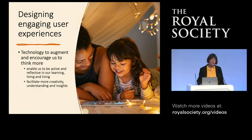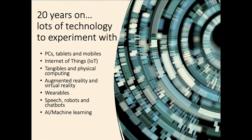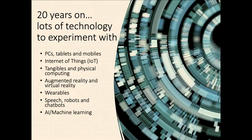Twenty years on from the beginning of ubiquitous computing, there's been a lot of technology to experiment with. We've had PCs and tablets and mobile devices. We've got the Internet of Things — putting sensors into the environment and connecting them to the Internet. We have tangibles and physical computing, augmented reality, virtual reality, wearables, speech interfaces, robots, chatbots, and of course artificial intelligence and machine learning. The question is: which of these technologies do we design for, and how?